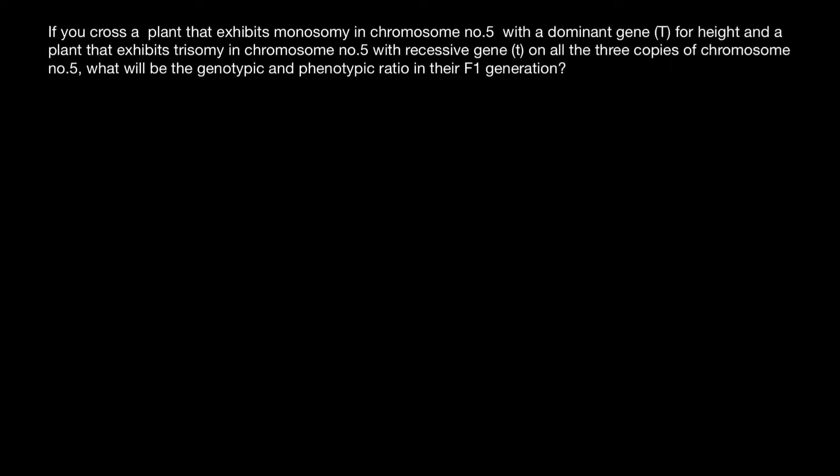What you need to know is that monosomy means that instead of the normal two copies of the chromosome, like we have in all diploid organisms, this organism has only one chromosome. And trisomy means that instead of two copies, the organism has three copies of the chromosome.